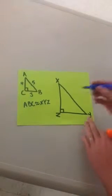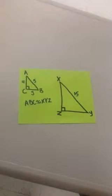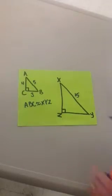and they give me the example that XY is 15. Well, if I want to find the missing sides, I set up a proportion.